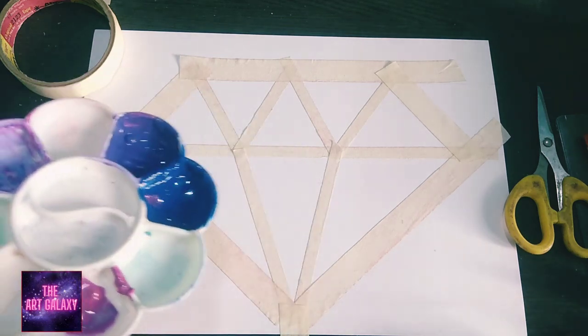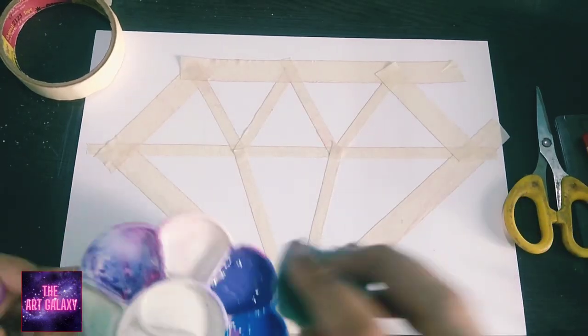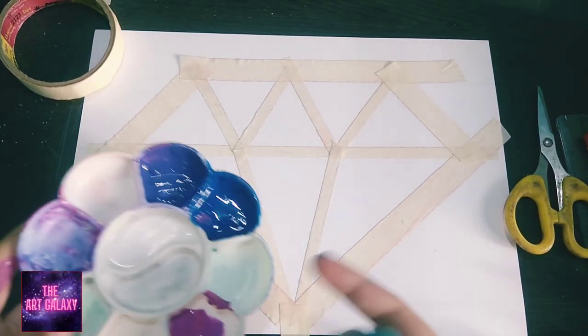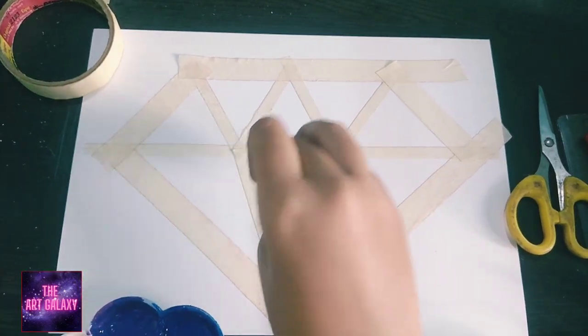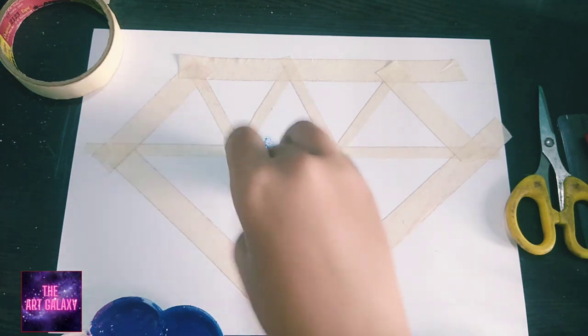Now use your sponge and dip it in color and use that dabbing technique to paint. Just use dabbing. Don't swipe too much.